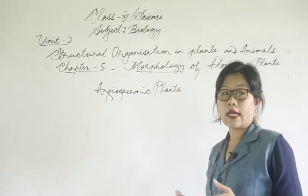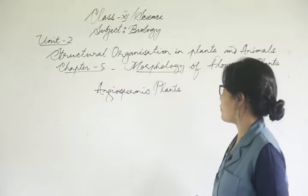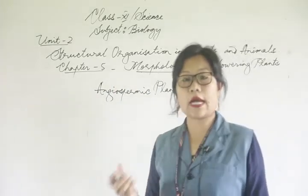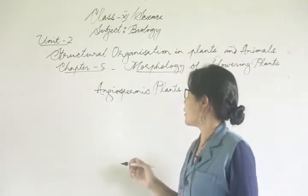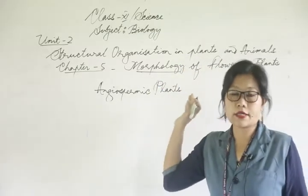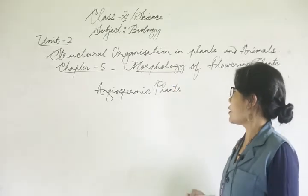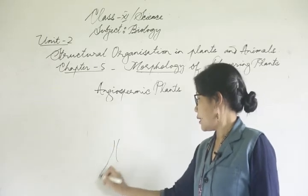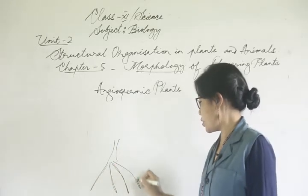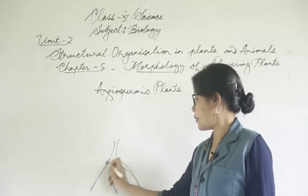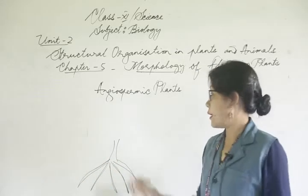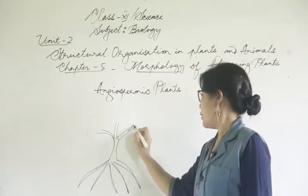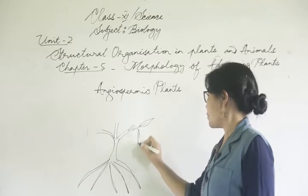In chapter number five, morphology of animals, you will study the external features of plants of different kinds. In a plant, you will find different parts — namely roots, stem and its branches, and leaves on the branches.